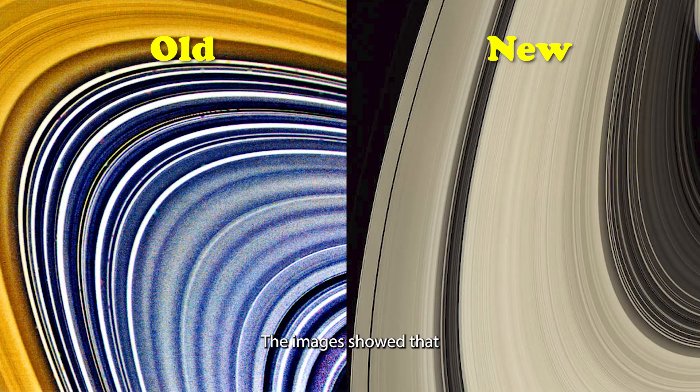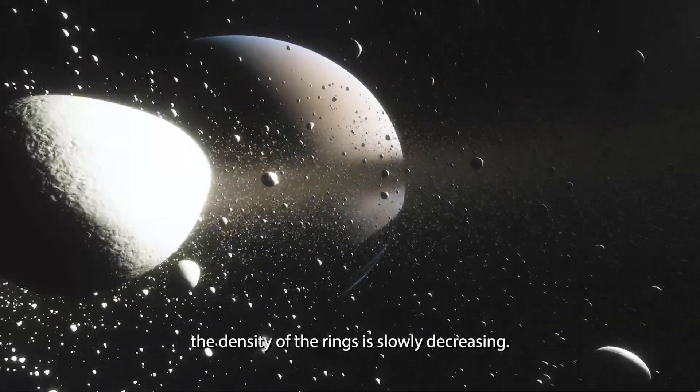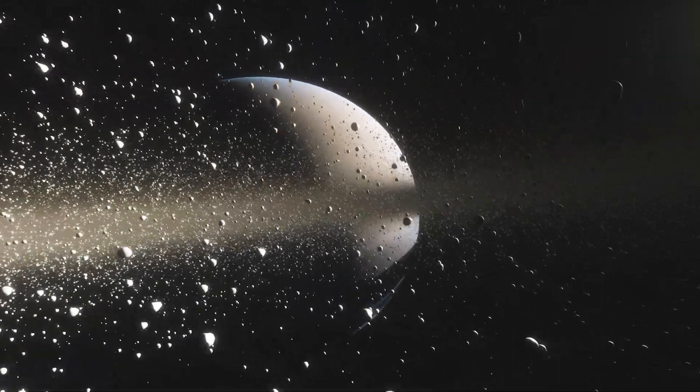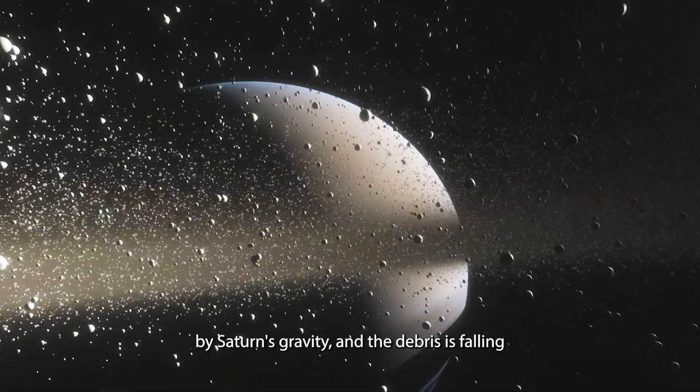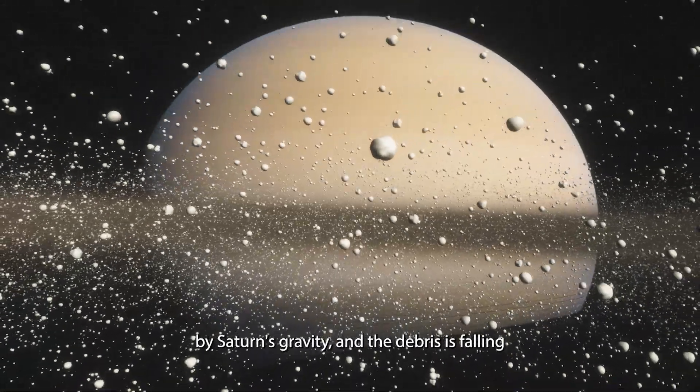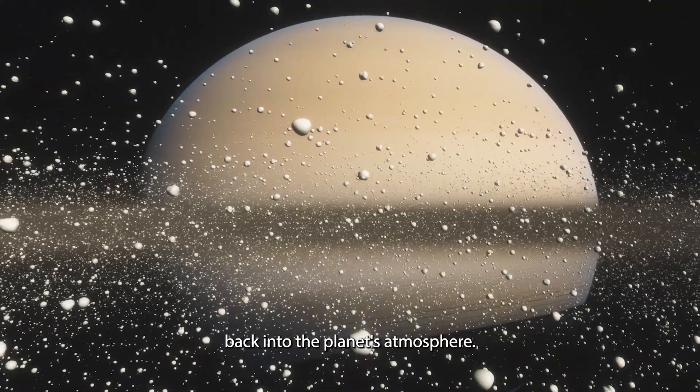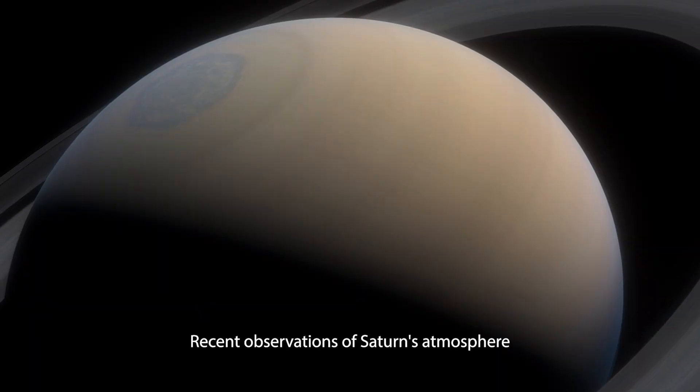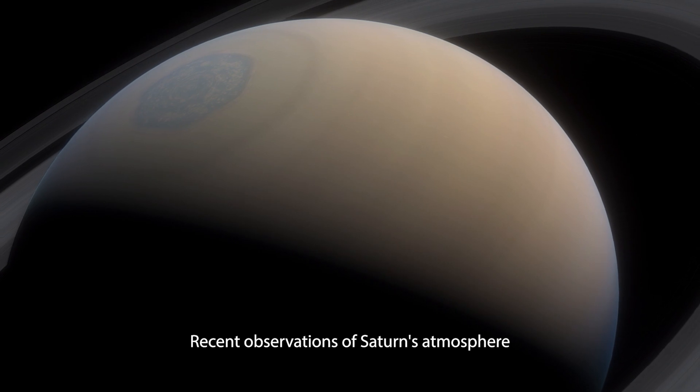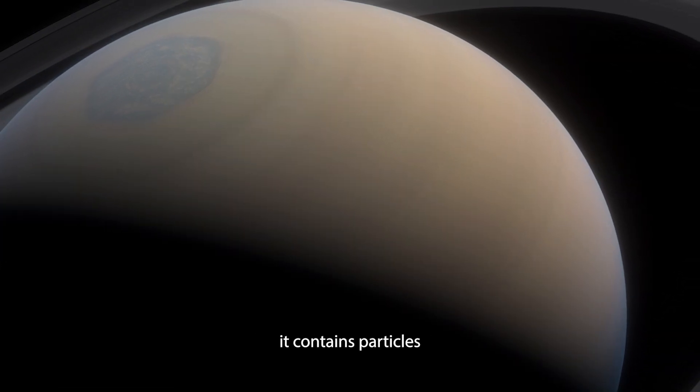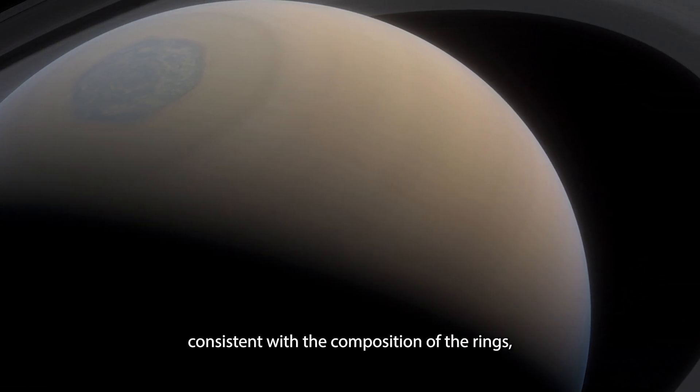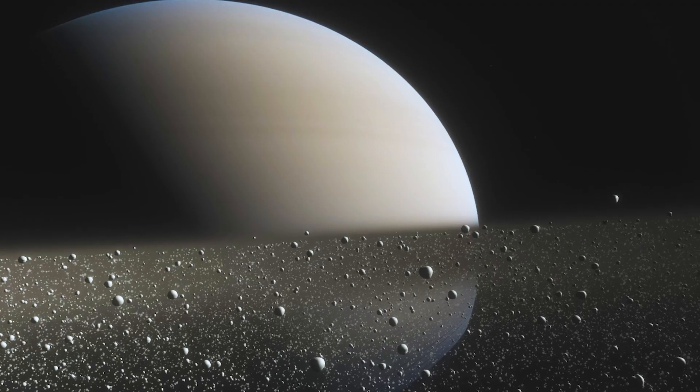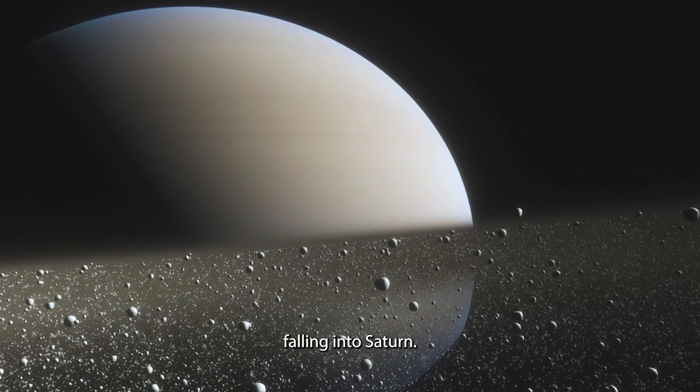The images showed that the density of the rings is slowly decreasing. The rings are being pulled apart by Saturn's gravity, and the debris is falling back into the planet's atmosphere. Recent observations of Saturn's atmosphere showed that it contains particles consistent with the composition of the rings, proving that the rings are indeed falling into Saturn.